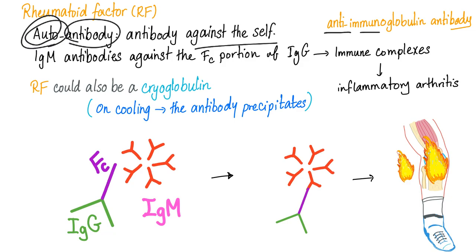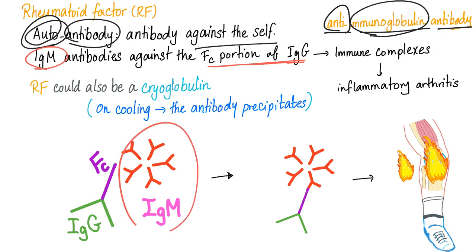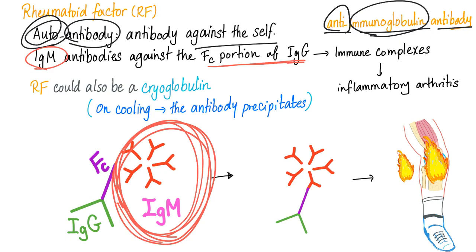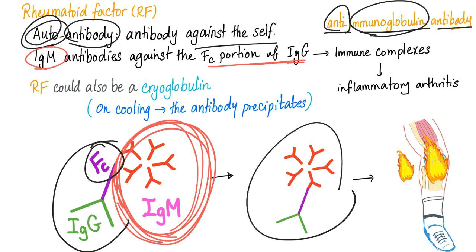Rheumatoid factor is an anti-immunoglobulin antibody — an antibody against an antibody, like a dog chasing its tail. It is usually IgM directed against the Fc portion of IgG. So here is the IgM rheumatoid factor binding to the Fc portion of IgG, the nasty auto-antibody. They bind together forming an immune complex, and that immune complex drives disease.